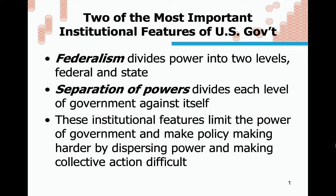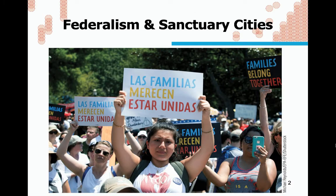We already know that federalism divides power into two levels: federal and state. We've talked a little bit about separation of powers — how we divide each level of government against itself — and how that separation of powers leads to checks and balances. These institutional features limit the power of government and make policymaking harder by dispersing power and making collective action difficult. The system was set up so that the government couldn't just do what it wanted willy-nilly. However, it can cause problems between what the federal government might want and what state and local governments might want.